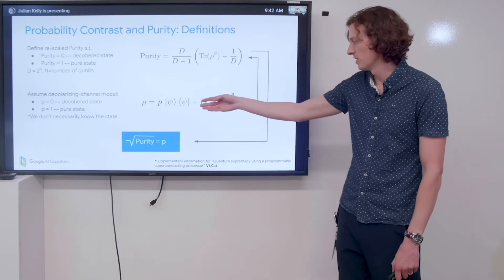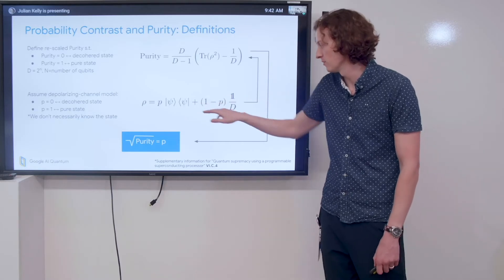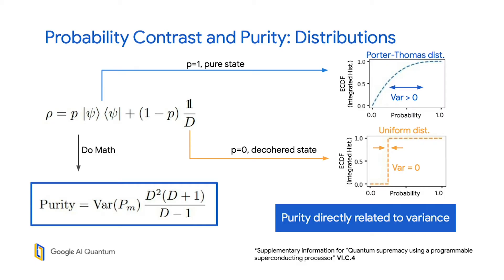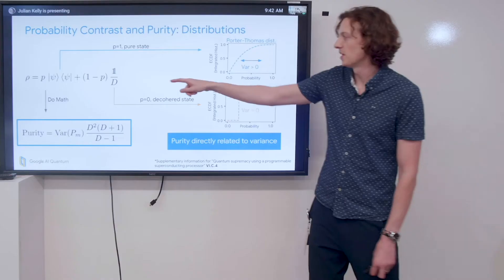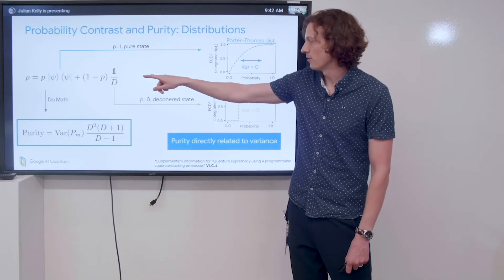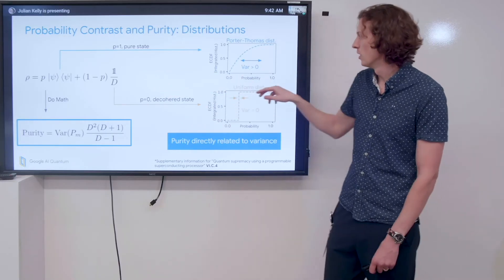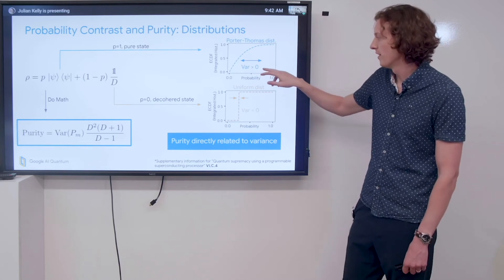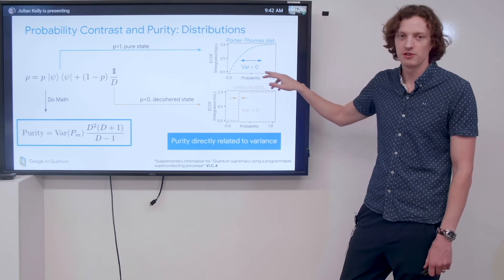Now let's talk about what it looks like if we're actually going to try and measure this density matrix rho. If we're measuring probabilities from the pure state distribution, we'd expect to get a Porter-Thomas distribution like we talked about before, and we notice there is some variance to this distribution that is greater than zero.